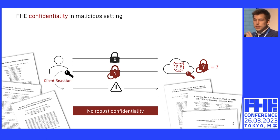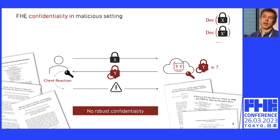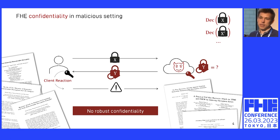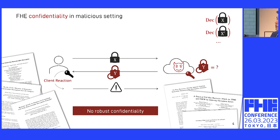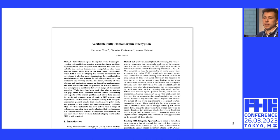I should mention that these attacks are also very hard to detect, since FHE doesn't really give you an interface to check whether the computation was done correctly or not. And this is a complete key recovery attack — so all the ciphertexts you ever stored on the cloud can be truly decrypted by the adversary once the key is recovered. This is the kind of problem we try to address in a recent paper we put out, addressing both correctness and confidentiality loss in this malicious setting.